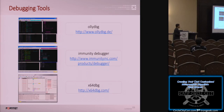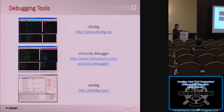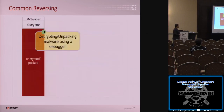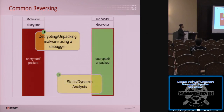I normally use Immunity Debugger. I usually prepare it because you can use Python scripts to automate your debugging. But if you encounter 64-bit malware, you can use x64dbg. Another good thing with x64dbg is that it is always being enhanced — they always have updates. For common reversing, if you encounter a packed or encrypted malware or infected file, you try to unpack the malware and use the decrypted or unpacked version for static or dynamic analysis using IDA or a disassembler.